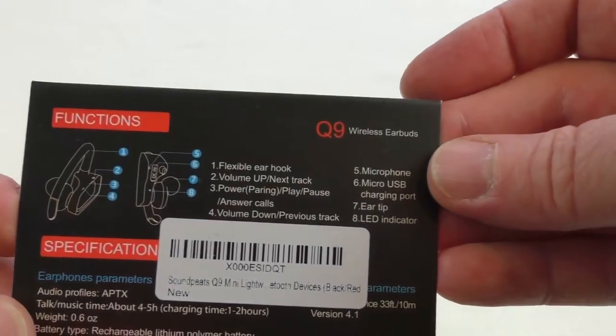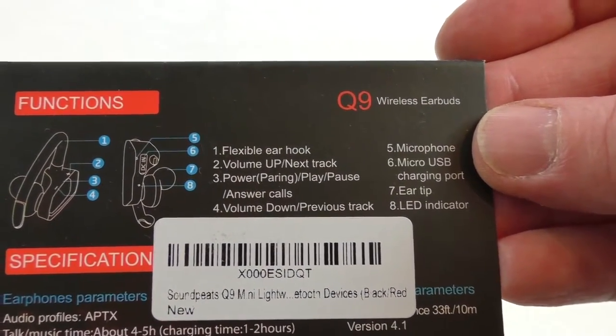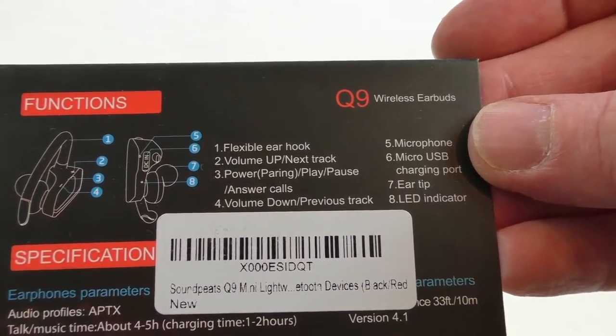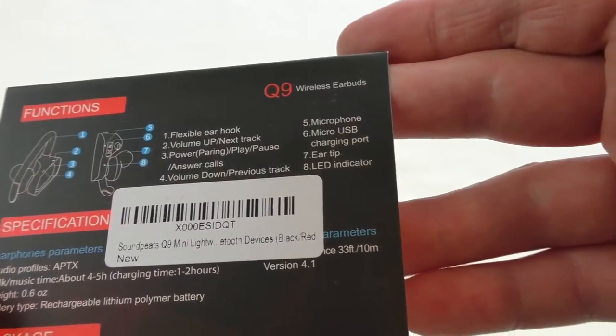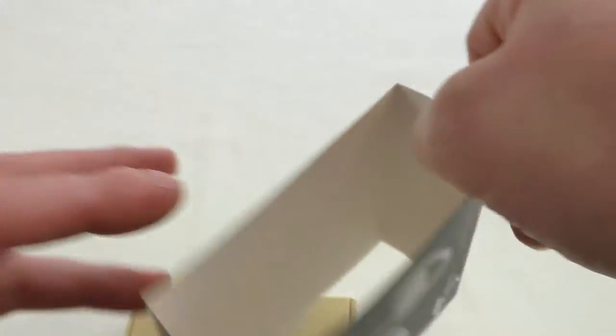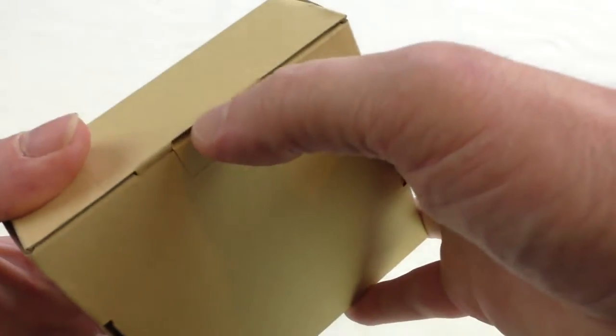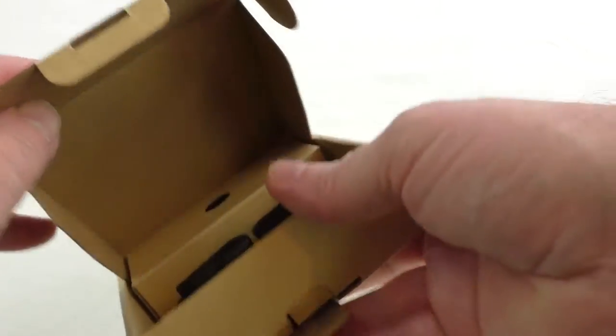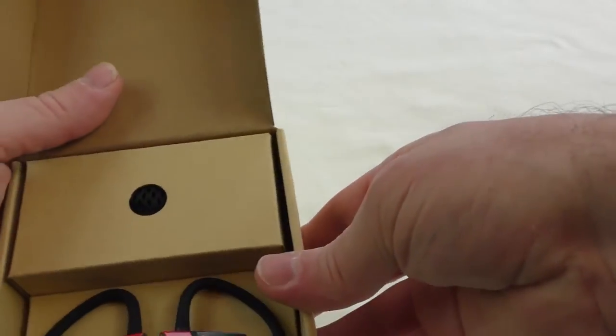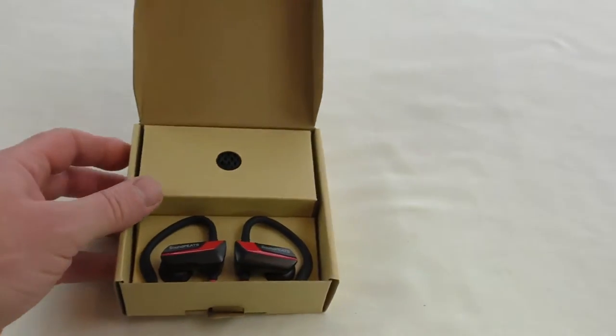It's got some of the basic specifications: flexible ear hook, and tells you what all the buttons are for. Let's come out to one side and have a look. It's a nice little package I think. They look okay, a strange shape I think.